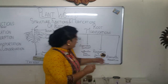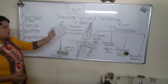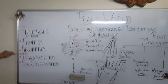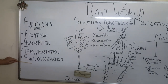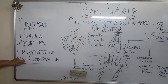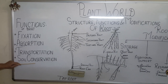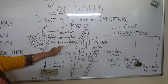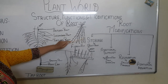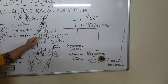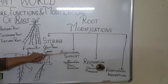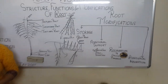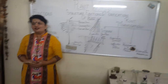In this module we have talked about the functions of the root: fixation, absorption, transportation, and soil conservation — meaning we protect the soil from erosion. We talked about tap roots and fibrous roots, and then root modifications including storage, additional support, respiration, and additional absorption.